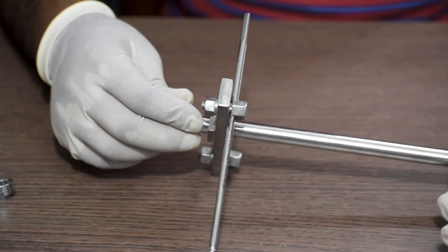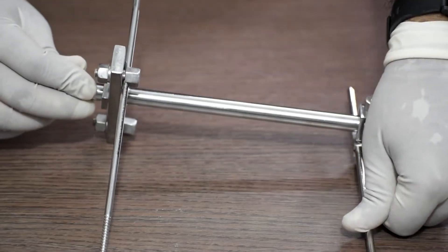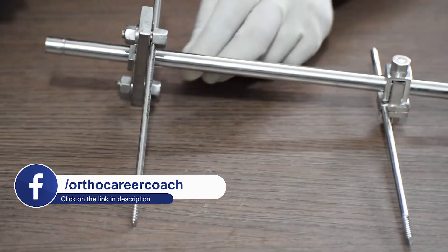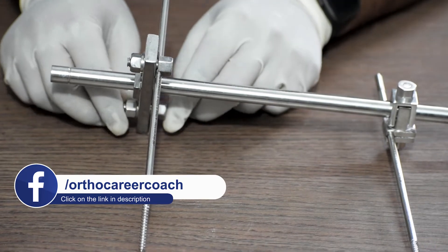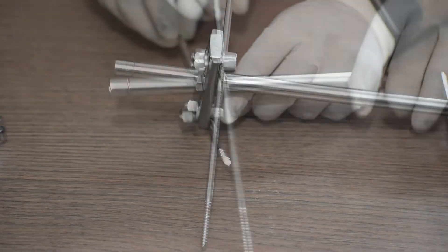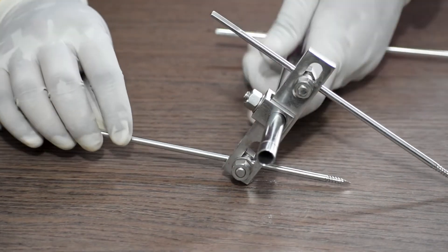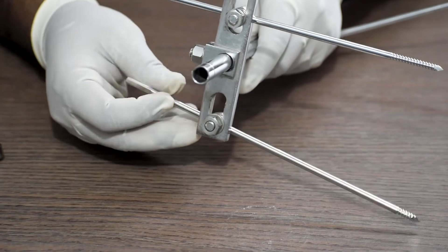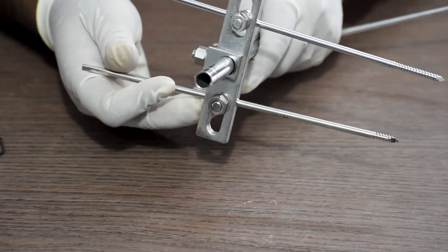See, this one is straight. On the other hand, this one is pointing in a different angle. You can fix another pin in the other end of the transverse clamp. You can adjust the distance of the pin from the fracture side by adjusting this nut.